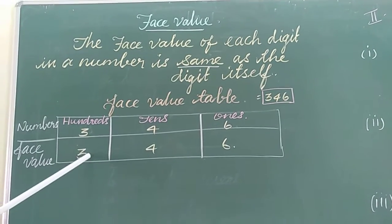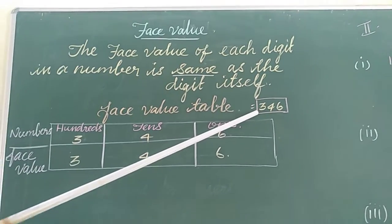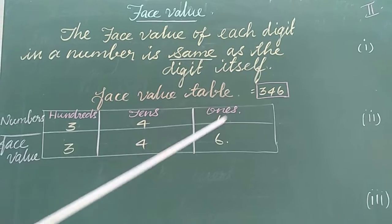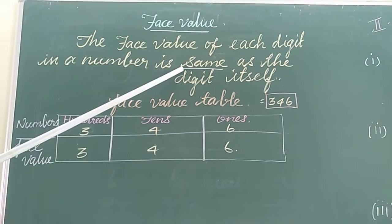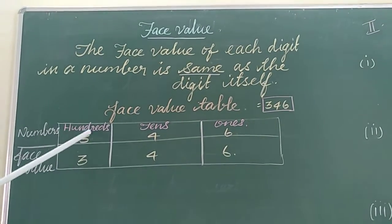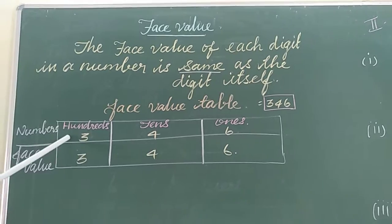Here, I have given a number for example for you, 346. 3 in 100th place, 4 in 10th place, 6 in 1st place. Already, I explained you, the face value is same as the digit itself. So, you have to write the same number in the column: 3, 4, 6.